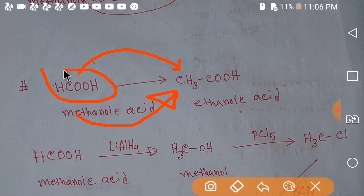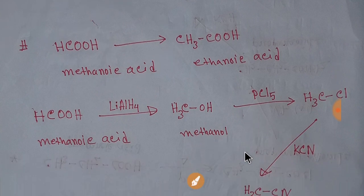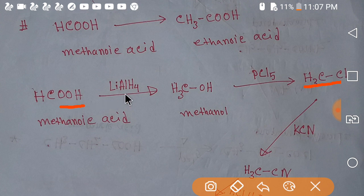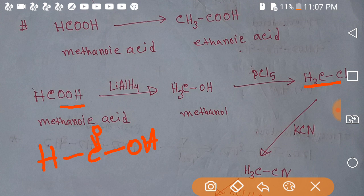We have to convert metanoic acid to its mother compound, alkyl halide. According to our plan, we are going to convert metanoic acid to methyl chloride. At first, if we reduce metanoic acid by lithium aluminum hydride, then we will get methanol. The carbonyl group of metanoic acid will be reduced to a CH2 group by lithium aluminum hydride.